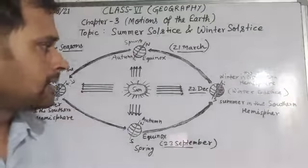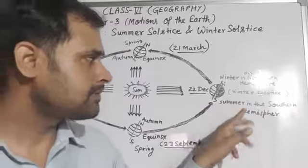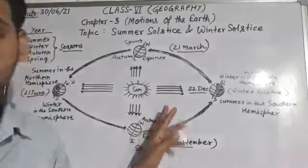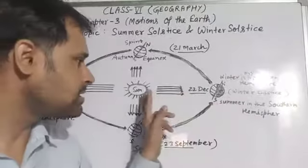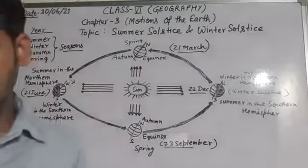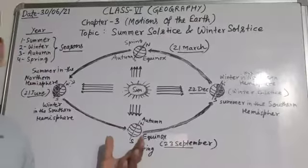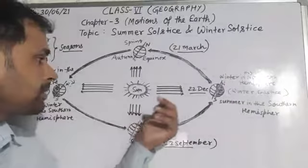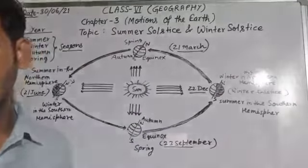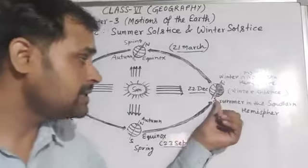Next, on 22nd December, the Southern Hemisphere is tilted towards the Sun — meaning the South Pole is tilted towards the Sun. The Sun rays fall vertically on the Tropic of Capricorn. Therefore, it is Summer in the Southern Hemisphere.